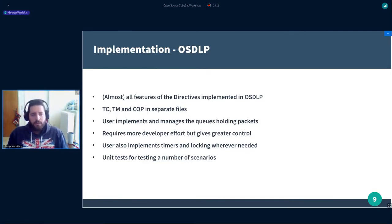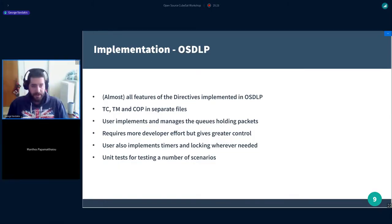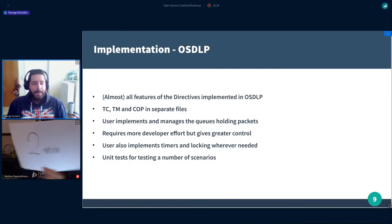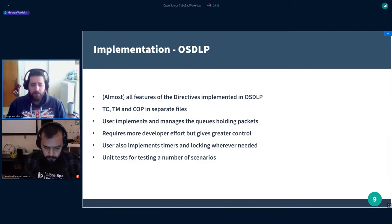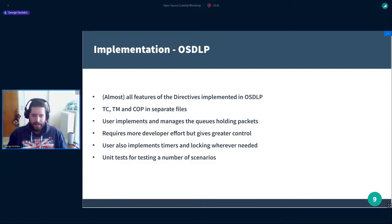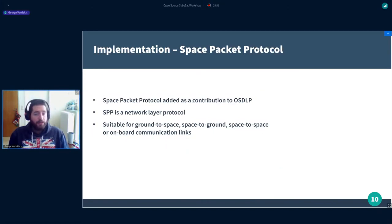Most features described in the directives are implemented in the OSDLP library. We have the TC, TM, and COP-1 in separate files. The user implements and manages the various queues, and also must implement any timers needed and any required locking. This requires more effort from the user but gives greater control, which is very important in such systems. We also have unit tests for testing various scenarios, and there was a community contribution of the Space Packet Protocol — a network layer protocol suitable for on-board communication links, ground-to-space, and space-to-space links.